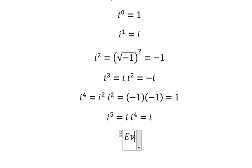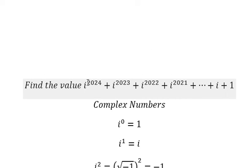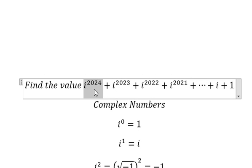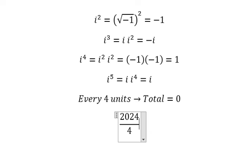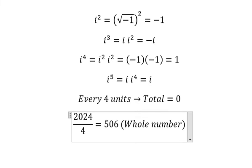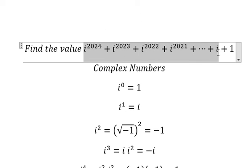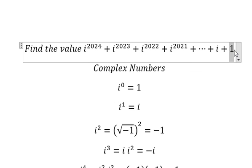Every group of four consecutive powers of i sums to zero. For the sum up to i^2024, we divide 2024 by four and get 506 — a whole number with no remainder. That means all 506 groups sum to zero, leaving only i^0, which equals one. So the final answer is one.